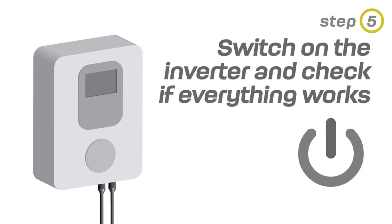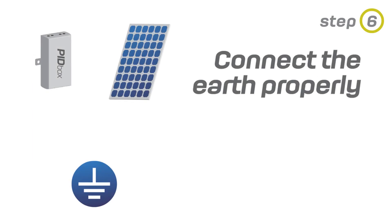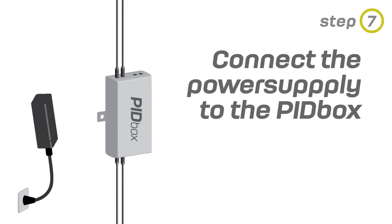Switch on the inverter and check if everything is working correctly. Connect the earth properly. Connect the power supply to the PID Box Mini.